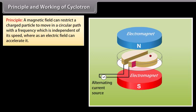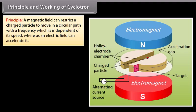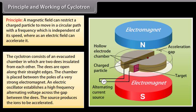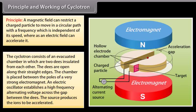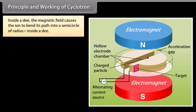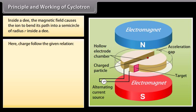The cyclotron consists of an evacuated chamber containing two D-shaped electrodes (dees) insulated from each other, open along their straight edges. The chamber is placed between the poles of a very strong electromagnet. An electric oscillator establishes a high-frequency alternating voltage across the gap between the dees, and a source produces the ions to be accelerated. Suppose an ion with positive charge Q and mass M is at the center of the gap when D1 is at negative potential with respect to D2. The ion is accelerated across the gap by the electric field towards D1, and inside a dee, the magnetic field causes the ion to bend into a semicircle of radius r.